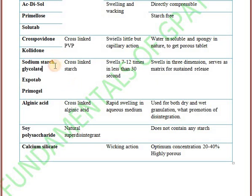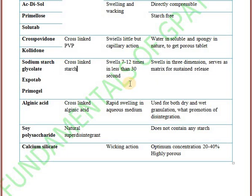Next is the starch derivative group — cross-linked starches: sodium starch glycolate, Explotab, and Primogel. These are cross-linked starches used as super disintegrants. The mechanism is swelling — they swell up to 7 to 12 times their original volume in less than 30 seconds. Their swelling is three-dimensional, and because of that they can also serve as a matrix for sustained release formulations.